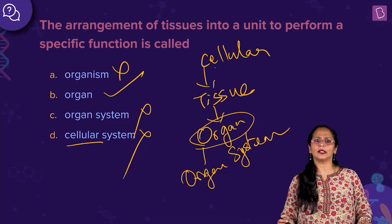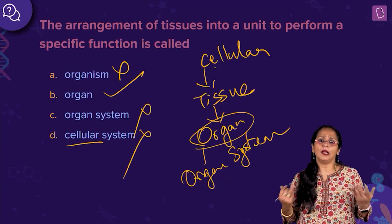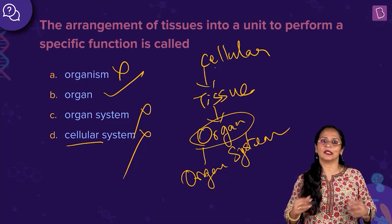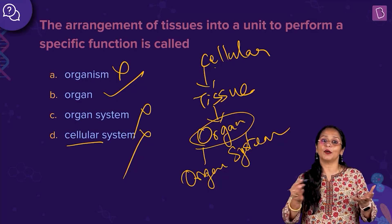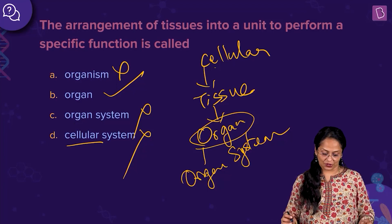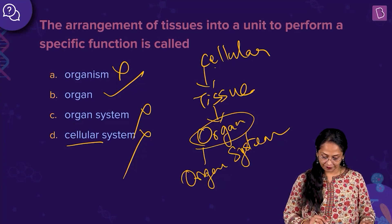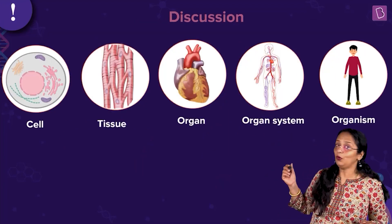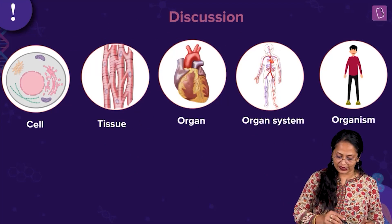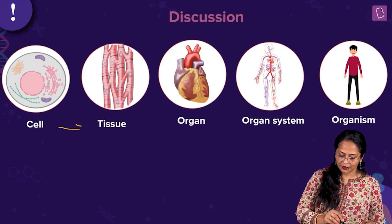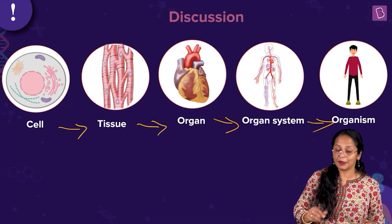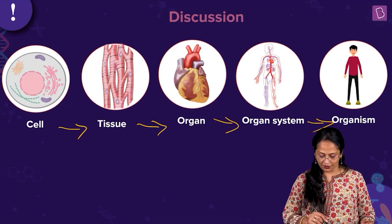Why is it not an organism? I am an organism, you are an organism. We are made up of organ systems. A number of organ systems is what constitutes the organism. So organism is wrong. You can see the level of organization: cell, tissue — the tissues form the organ, organs form the organ system, and finally the organism.